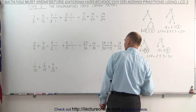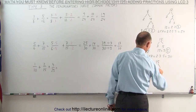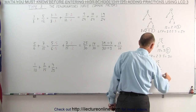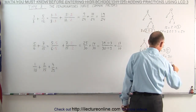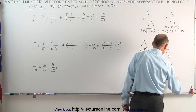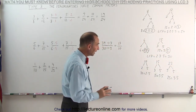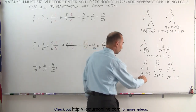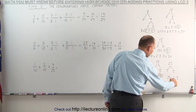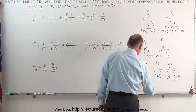On our next example, again notice that the denominators have common factors, which means we need to write each denominator as a product of its prime factors. Starting with 10: that is 2 times 5. The next denominator, 15, is divisible by 3, which gives us 5, so 15 can be written as 3 times 5. And 25 is divisible by 5, which gives us 5, so 25 can be written as 5 times 5.